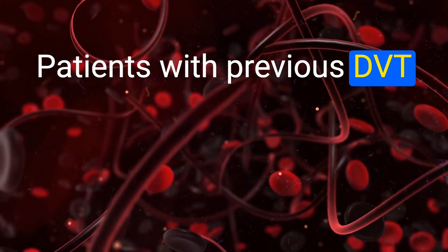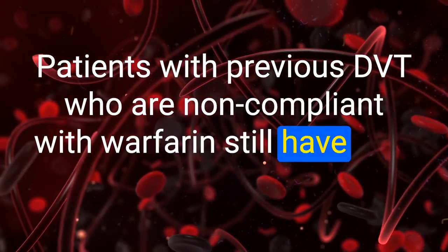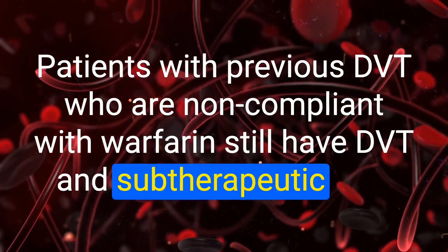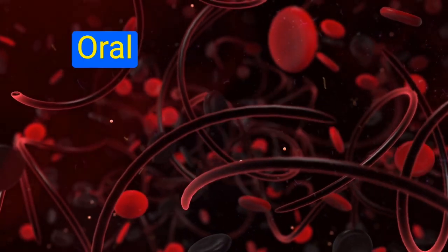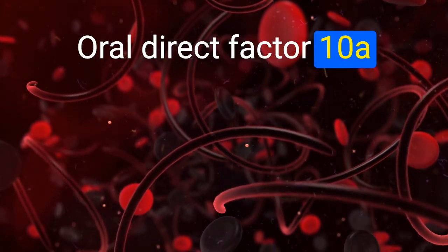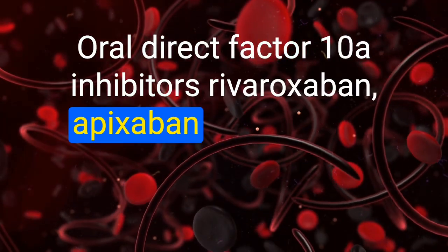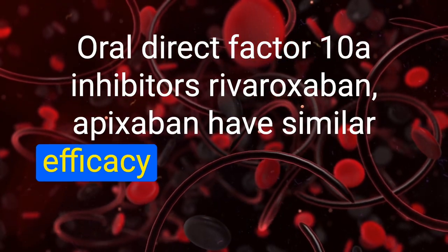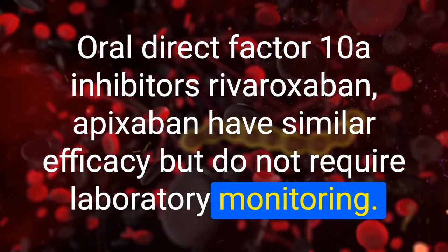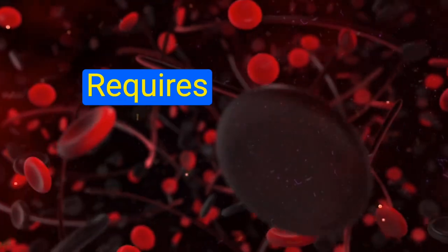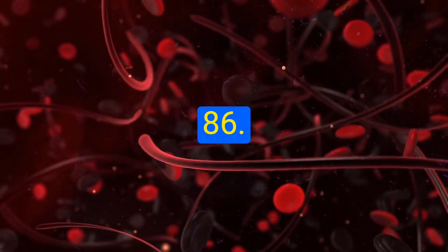Patients with previous DVT who are non-compliant with warfarin still have DVT and a subtherapeutic INR — what do you do? Oral direct factor Xa inhibitors: rivaroxaban or apixaban. These have similar efficacy but do not require laboratory monitoring, require no overlap with heparin, and have an acute onset of action.